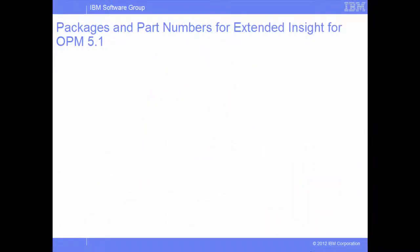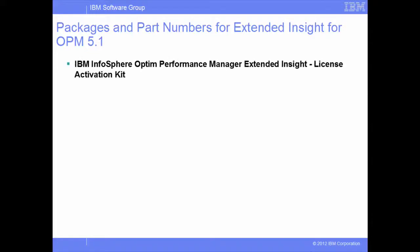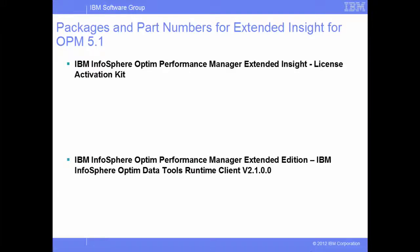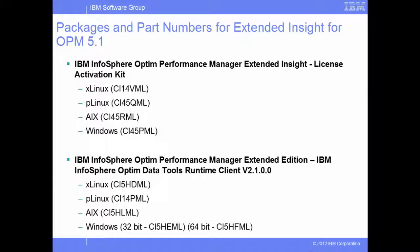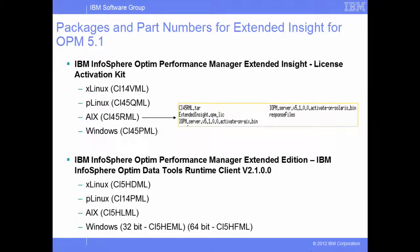There are two packages needed for Extended Insight. These packages are included in Extended Edition or can be obtained separately. The first is the License Activation Kit, which enables the Extended Insight feature on the Infosphere Optim Performance Manager Server. The second is the Infosphere Optim Data Tools Runtime Client Software. Depending on the platforms and part numbers, there are different files after unzipping or untarring them. In this example, we are showing the contents for the AIX platform.